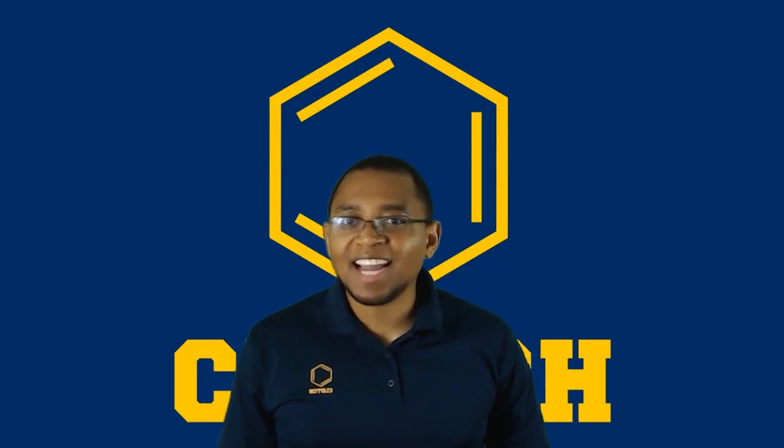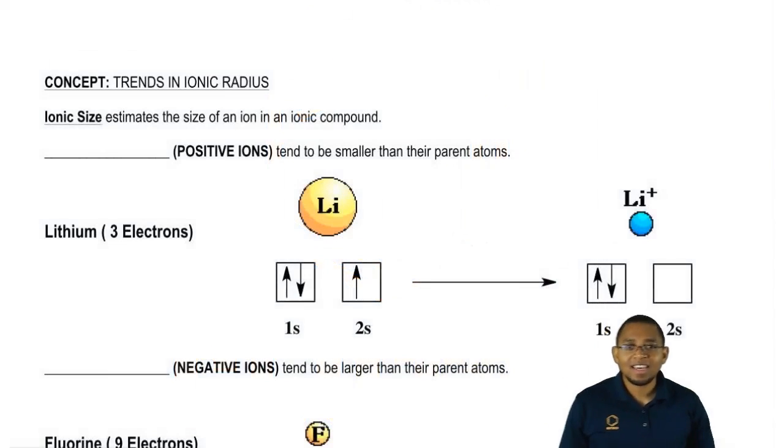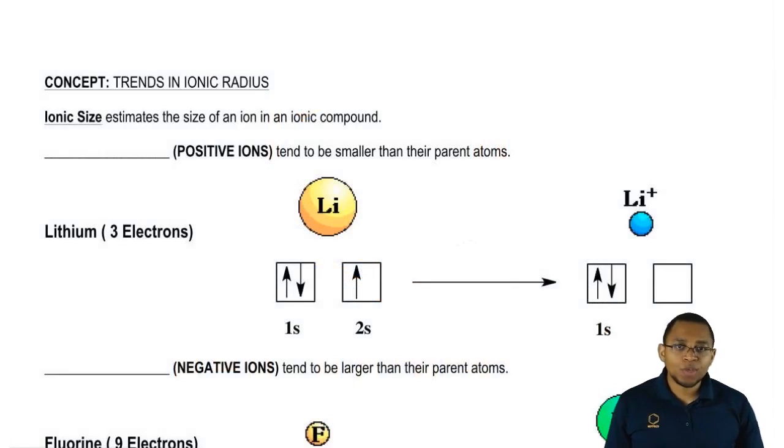In this new video, we're going to take a look at ionic radius. Atomic radius deals with the neutral forms of elements. Ionic radius deals with the ionic forms of elements.